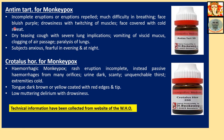Antimonium tartaricum for monkeypox: incomplete eruptions or eruptions that are repelled. Much difficulty in breathing. Face bluish or purple. Drowsiness with twitching muscles. Face covered with cold sweat. Dry, teasing cough with severe lung implications. Vomiting of viscous mucus. Clogging of air passages. Paralysis of lungs. Subject is anxious and fearful in the evening and at night — this last symptom is a general symptom.